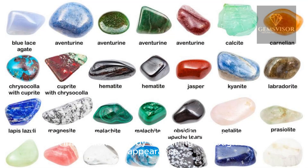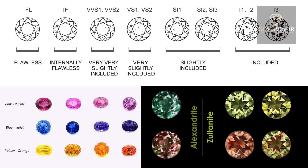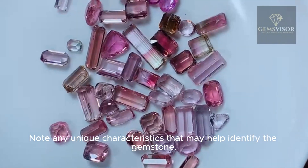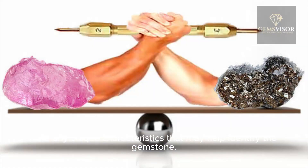Start by examining the rough stone's appearance. Look at its color, shape, and any visible features such as inclusions or crystal structure. Note any unique characteristics that may help identify the gemstone.